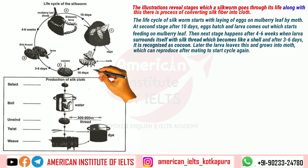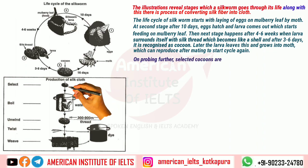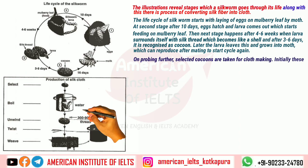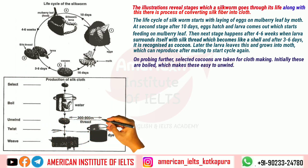On probing further, selected cocoons are taken for cloth making. Initially these are boiled, which makes them easy to unwind. Consequently, unwinding gives a silk thread of 300 to 900 meters in length.